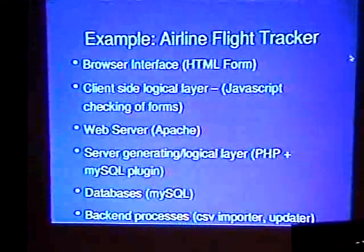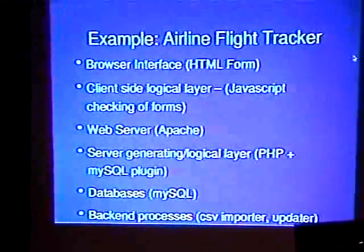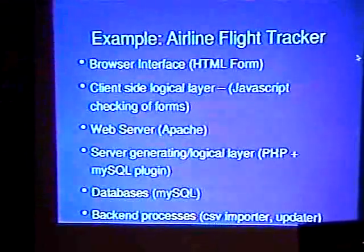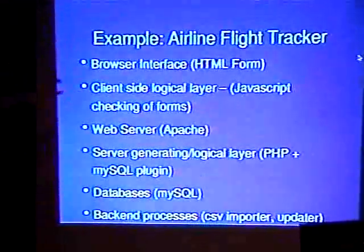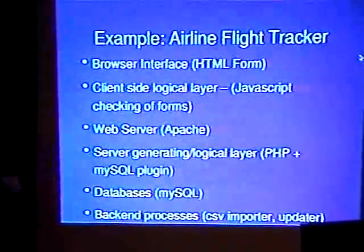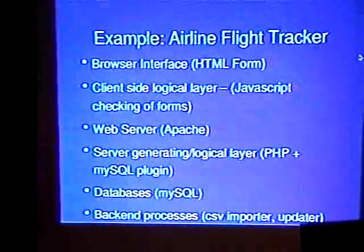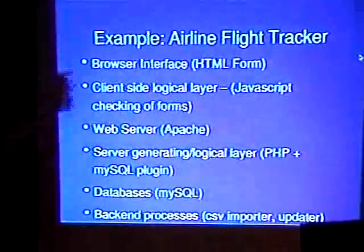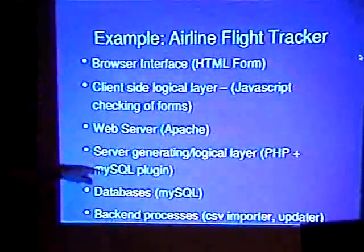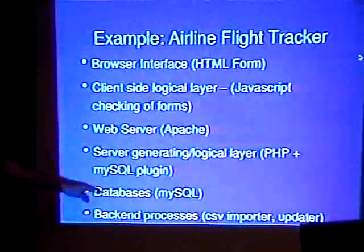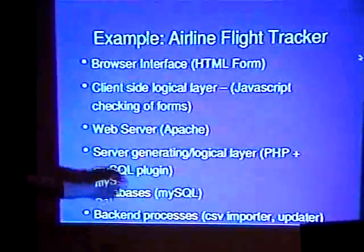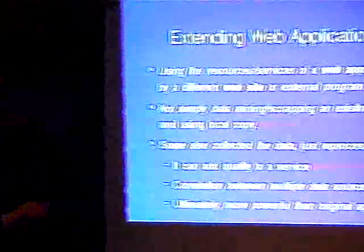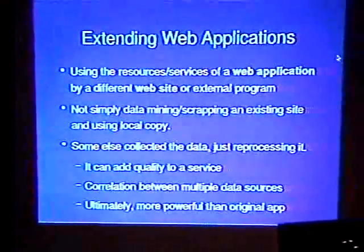Just to beat this horse a little more — a prime example: airline flight tracker. You've got an HTML form, some JavaScript which checks whether they entered a valid flight number — if it's more than four digits or has some letters, this is not a Delta flight number. They've got a web server, a PHP script with MySQL, and they also have some back-end process importing comma-separated values, maybe flight information or reservation information. So just to break that down.